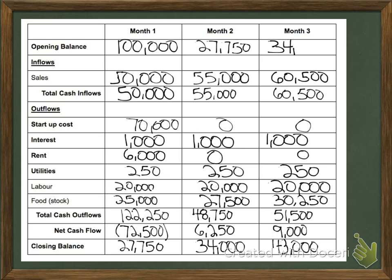You cannot get those closing balances without first doing the opening balance step. You have to do each inflow and each outflow first, then your totals, then your net cash flow, then you can get your closing balance for your first month, opening balance for your next month, closing, opening, closing — going down the line. The biggest mistakes people make on these questions are small math errors, or simply putting the wrong number on an inflow or outflow. So just be careful. That is cash flow forecast.